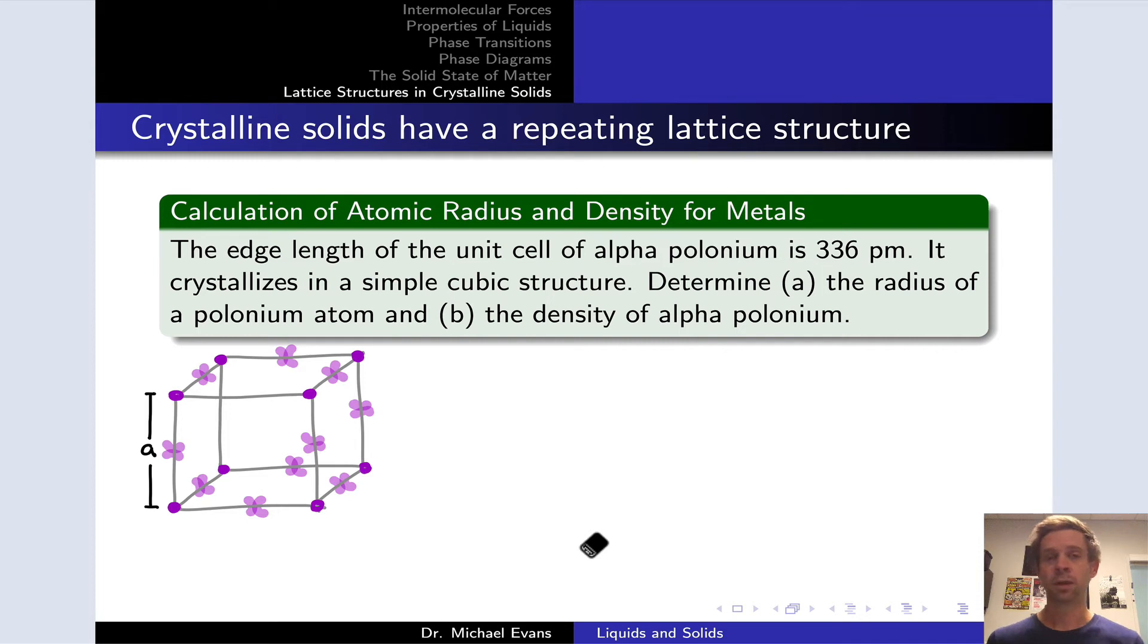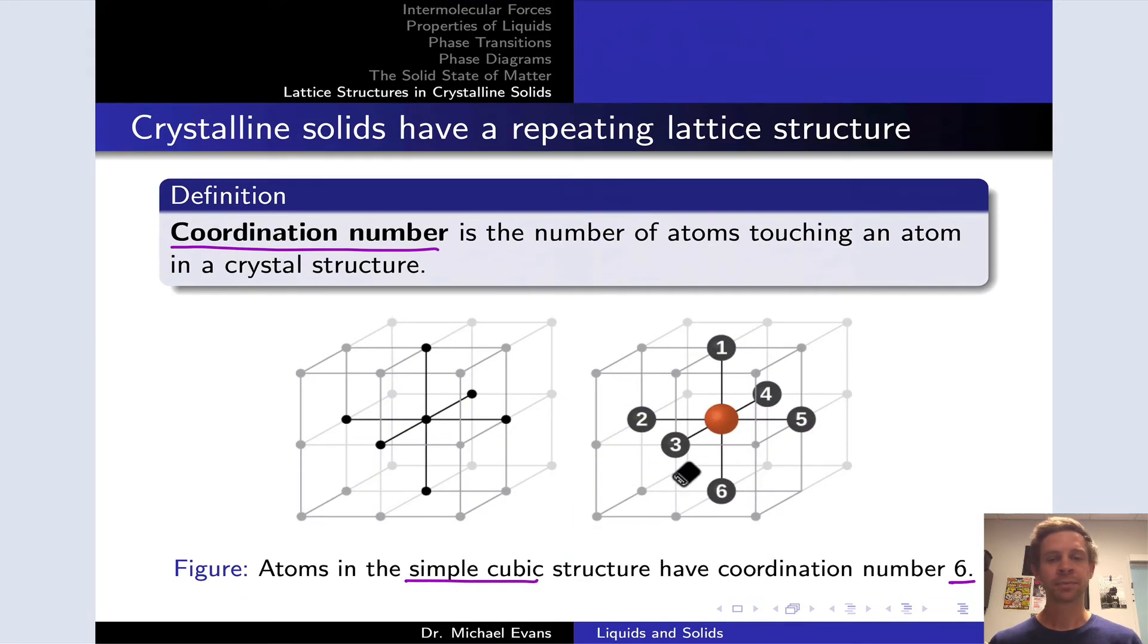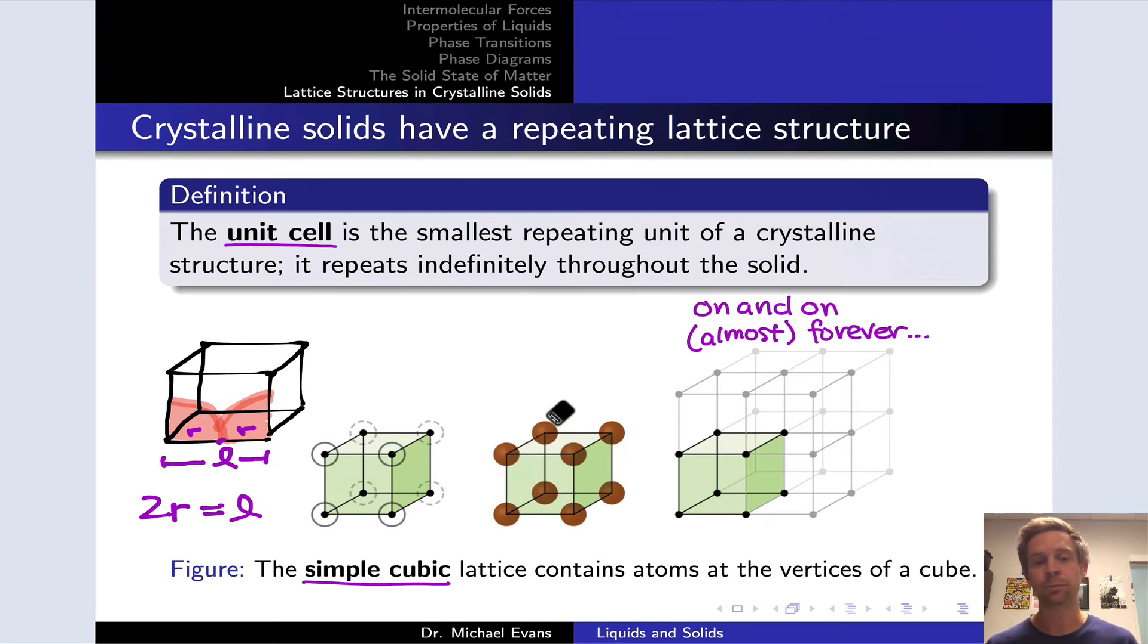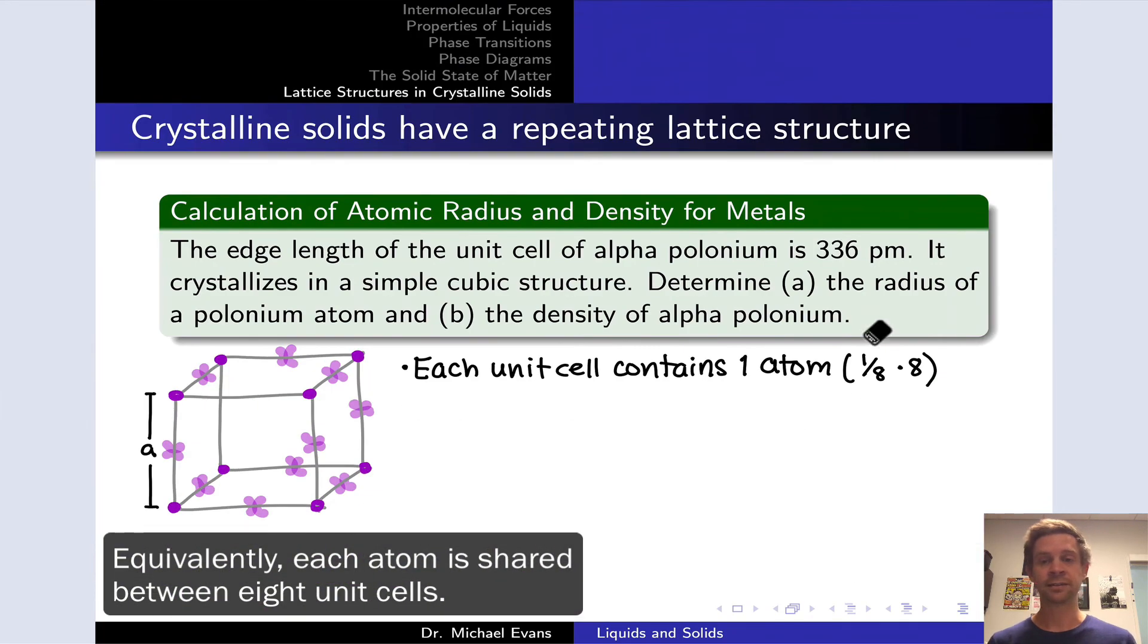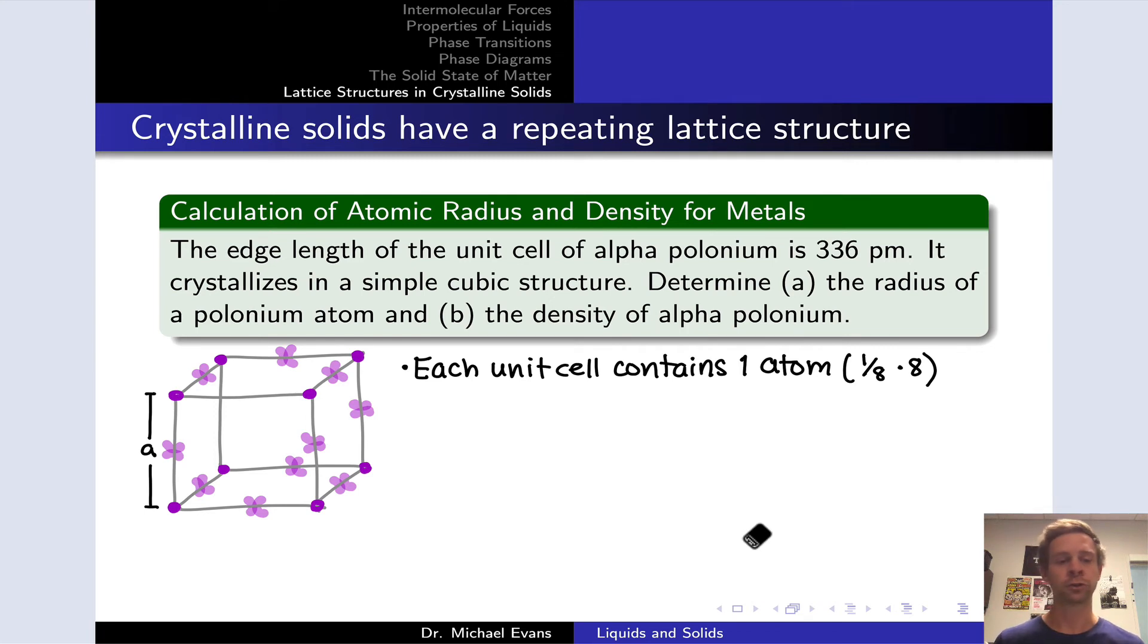Now one thing that we should point out about the simple cubic lattice is that one total atom is contained within this structure. How do we know that? Well, at each corner of the simple cubic lattice, we have an eighth of an atom. We've got one-eighth of the entire atom cut off by this cube vertex, and we have eight total vertices in the cube. So with eight total vertices and one-eighth of an atom at each vertex, we're dealing with one total atom contained within the cube. We cut off everything that's outside of the cube, only one atom total remains within the cube. So each unit cell contains one atom. This is going to be useful for determining the mass of polonium contained within the unit cell, which we'll do here a little bit later.